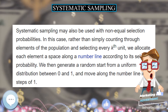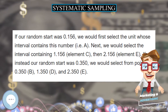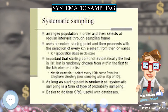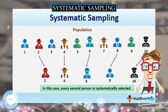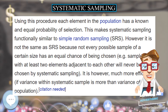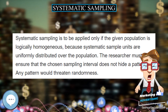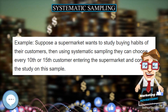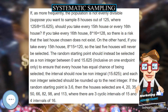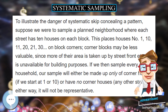If, as more frequently occurs, the population is not evenly divisible — suppose you want to sample 8 houses out of 125, where 125 divided by 8 equals 15.625 — should you take every 15th house or every 16th house? If you take every 16th house, 8 times 16 equals 128, so there is a risk that the last house chosen does not exist. On the other hand, if you take every 15th house, 8 times 15 equals 120, so the last 5 houses will never be selected. The random starting point should instead be selected as a non-integer between 0 and 15.625, inclusive on one endpoint only, to ensure that every house has equal chance of being selected. The interval should now be non-integral, 15.625, and each non-integer selected should be rounded up to the next integer.